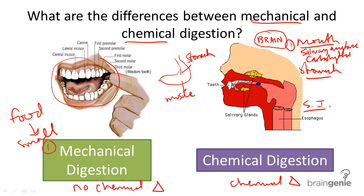The second step takes place in the stomach, where enzymes called pepsin, for example, will break down proteins into smaller individual components, such as amino acids.